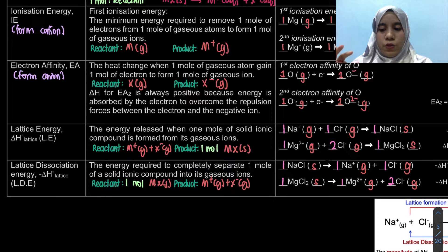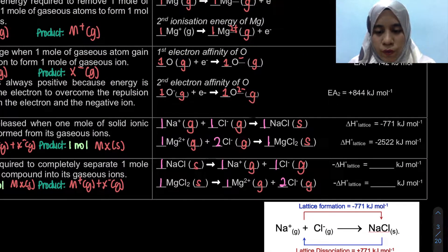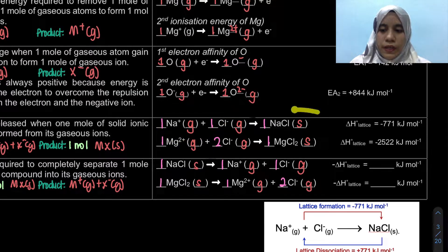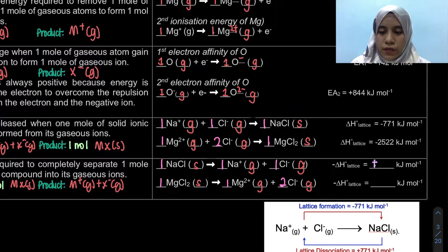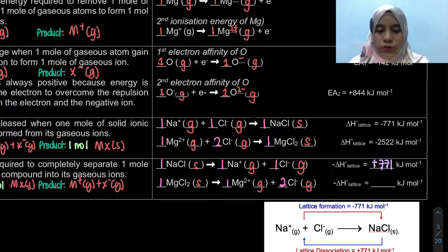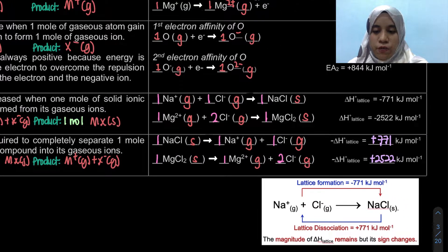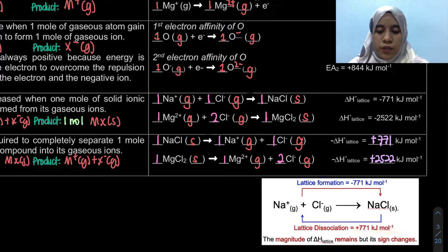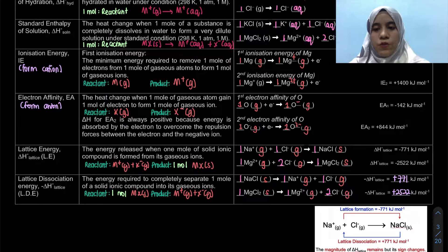The lattice dissociation energy equation is the reverse of the lattice energy equation, so the value is the same magnitude but opposite in sign. For example, if the lattice energy of NaCl is −771 kJ/mol when forming the solid, then the lattice dissociation energy is +771 kJ/mol when separating the solid into gaseous ions. The magnitude remains the same; only the sign changes.